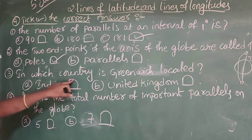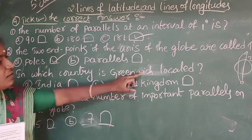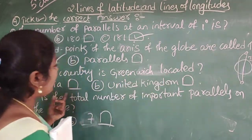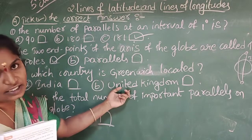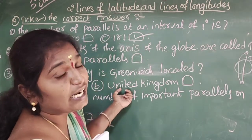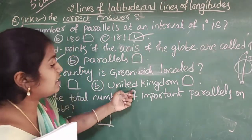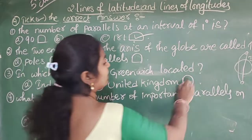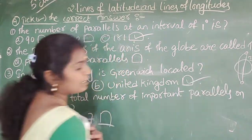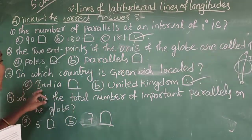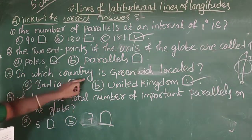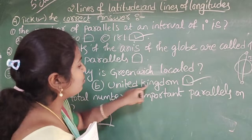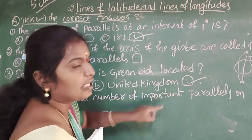Third question: In which country is Greenwich located? India or United Kingdom? Greenwich is located in London. London is in the United Kingdom. So the answer is United Kingdom.